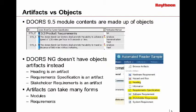Whereas in DOORS Next Generation, it does not have objects — that's something that took a little bit of getting used to. Instead of objects, you have artifacts. Artifacts can be pretty much anything that makes sense to you. There's still a concept of an artifact type, so for example there's still a concept of having a text artifact type.